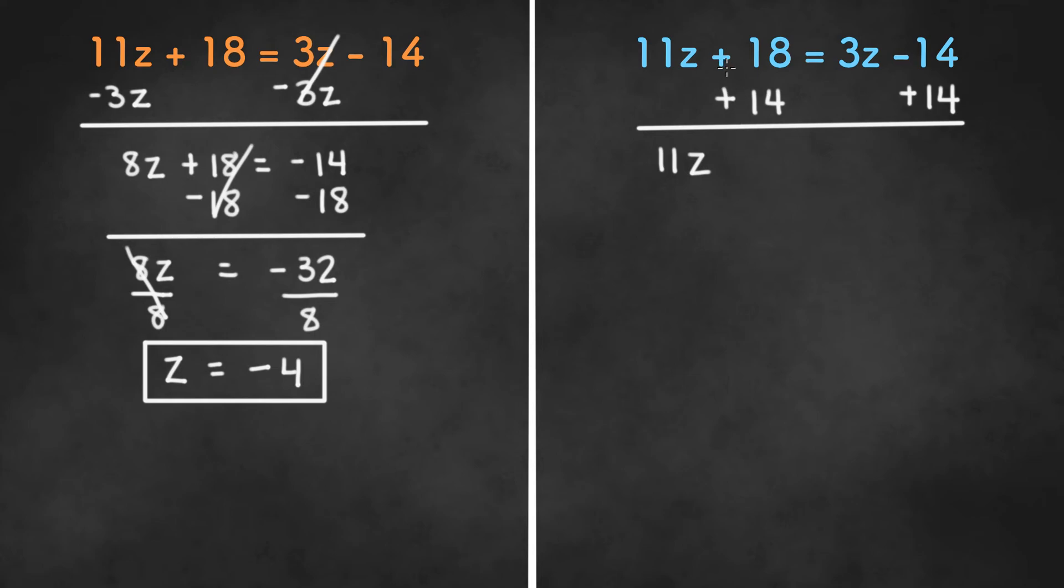11z plus 18 plus 14, which is 32 on the left hand side, and 3z on the right hand side.